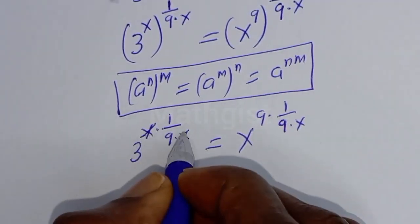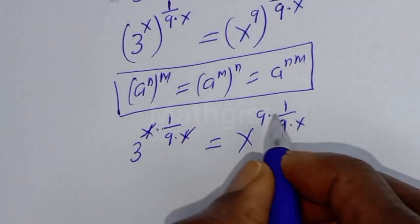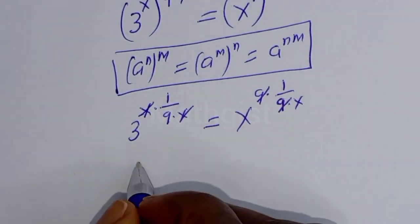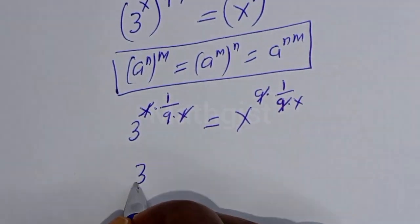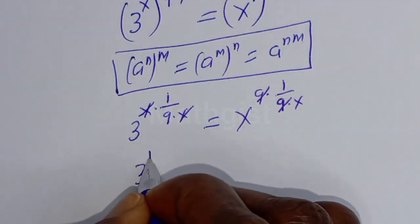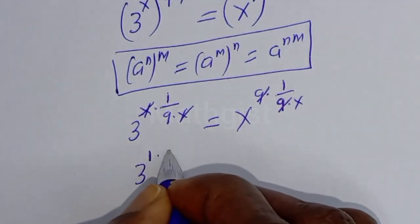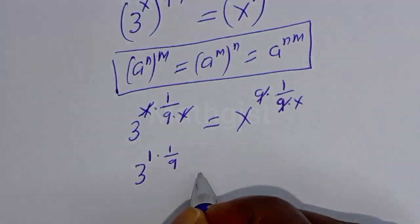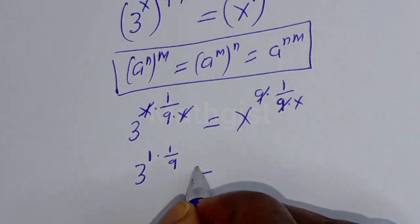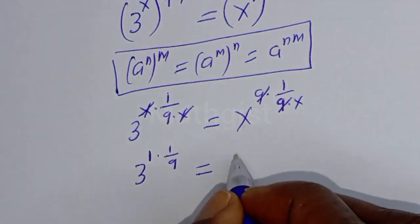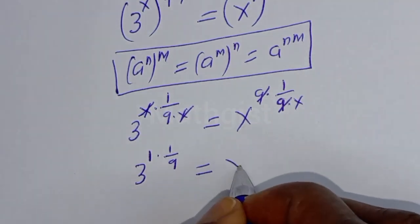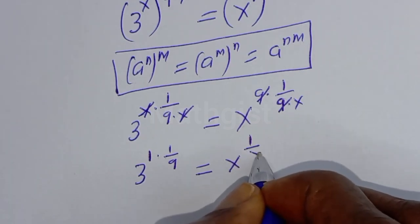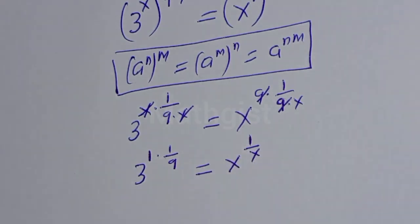So this will cancel this and this will cancel this. Then the left hand side is 3 raised to power 1 multiplied by 1 over 9, equal to the right hand side which becomes s raised to power 1 over x.